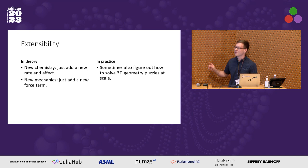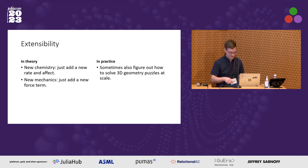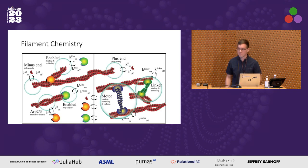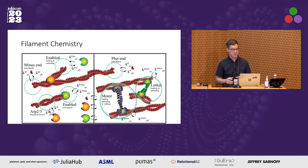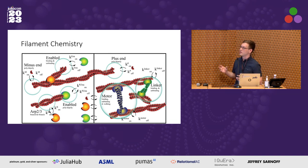Julia is a lot easier to solve 3D math problems in than C++. Here are some of the things we've added to this base model so far: a huge range of different filament chemistries including capping proteins, branching, motor proteins, and cross-linking.